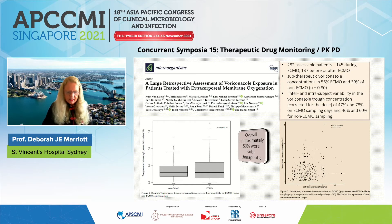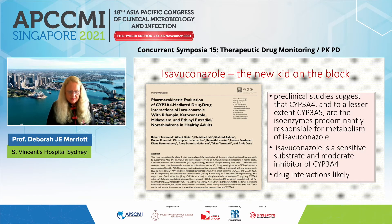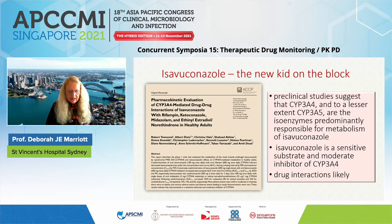It's important to recognise that approximately 50% overall were subtherapeutic. Regarding isavuconazole — the newer agent we have used sparingly due to cost but expect to use more as resistant organisms emerge — pre-clinical studies suggest cytochrome P450 3A4 and to a lesser extent 3A5 are predominantly responsible for its metabolism, and it is a sensitive substrate and moderate inhibitor of 3A4, suggesting drug interactions are likely and therefore a role for therapeutic drug monitoring.